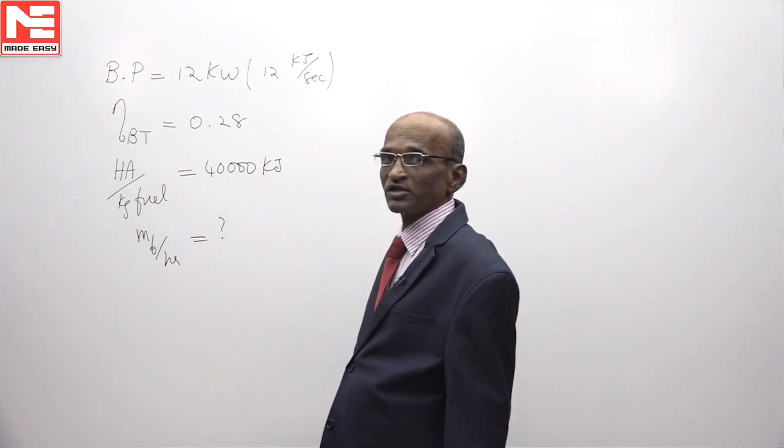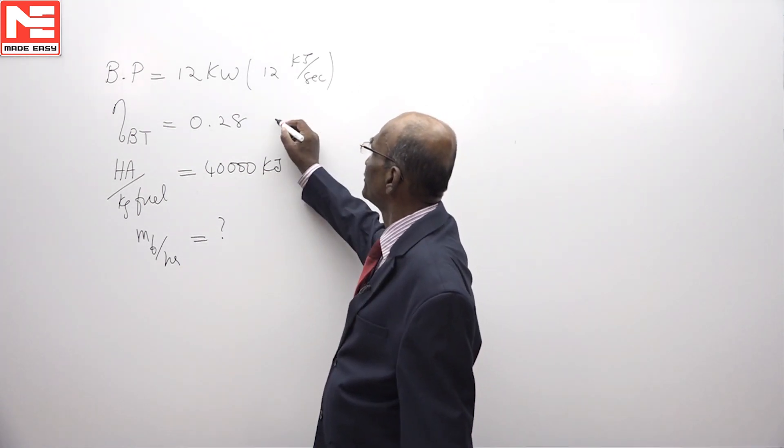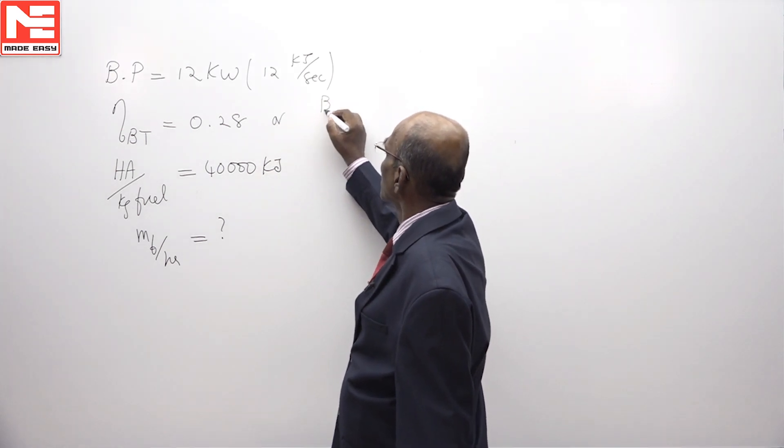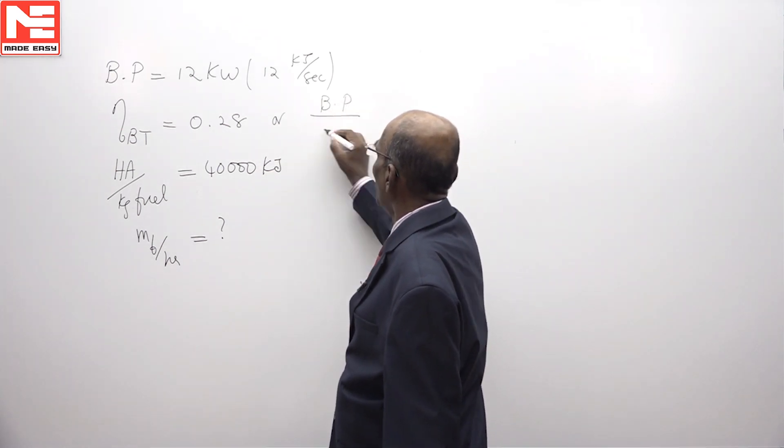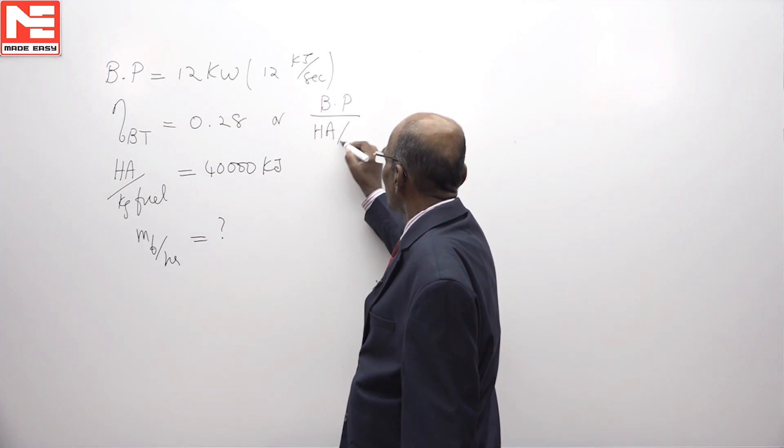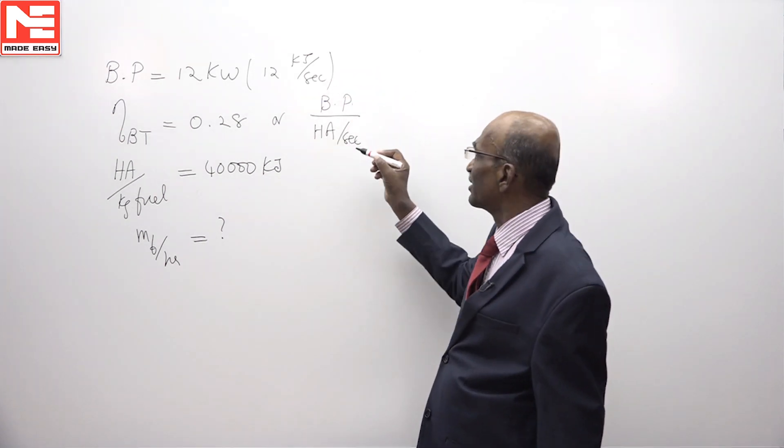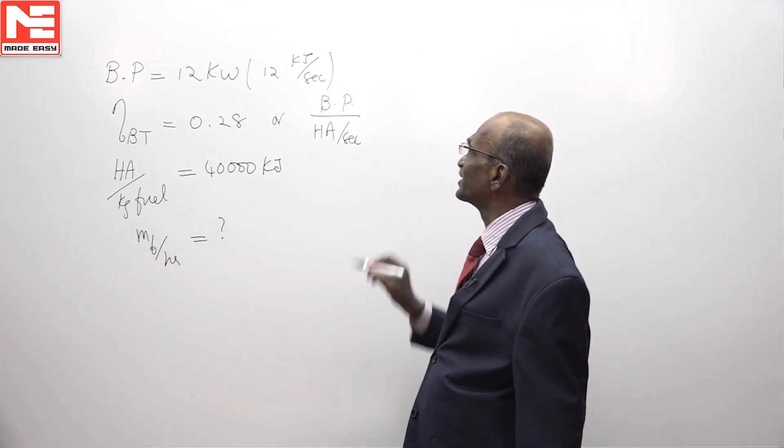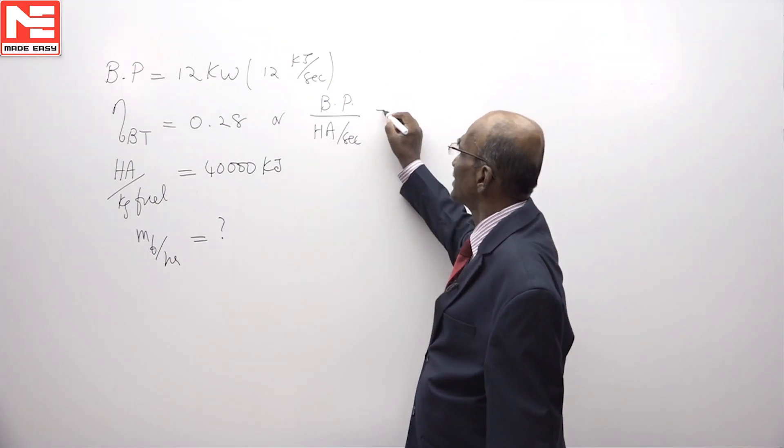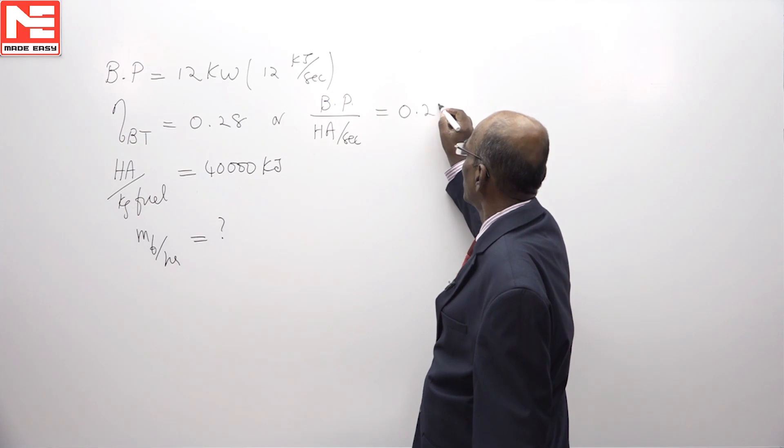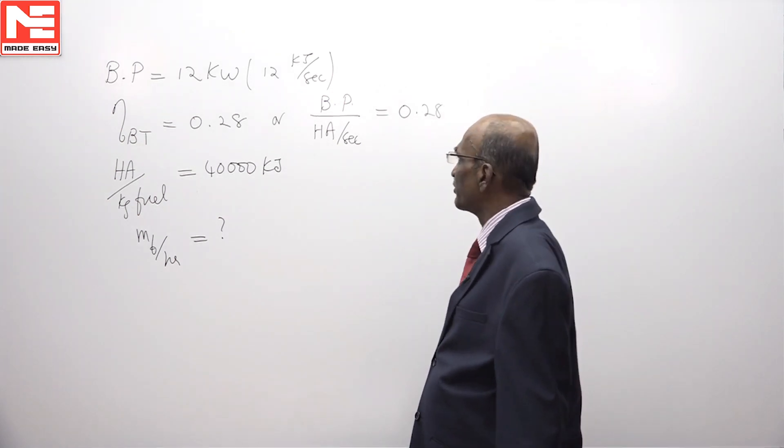The brake thermal efficiency also is given. This brake thermal efficiency is the brake power divided by heat added per second. As the power is in kilojoules per second to get a matching ratio, we should also take the heat added per second and this is given equal to 0.28, of which we know the brake power already.